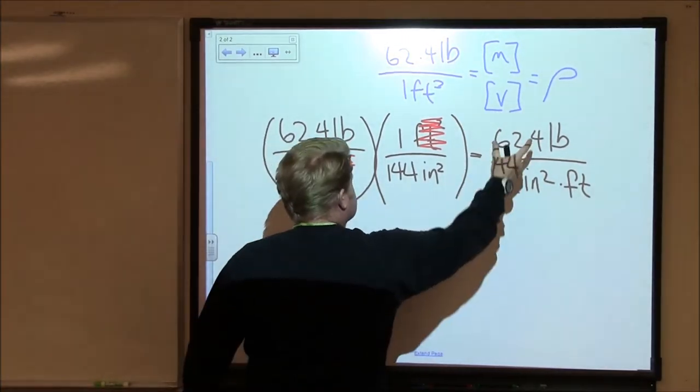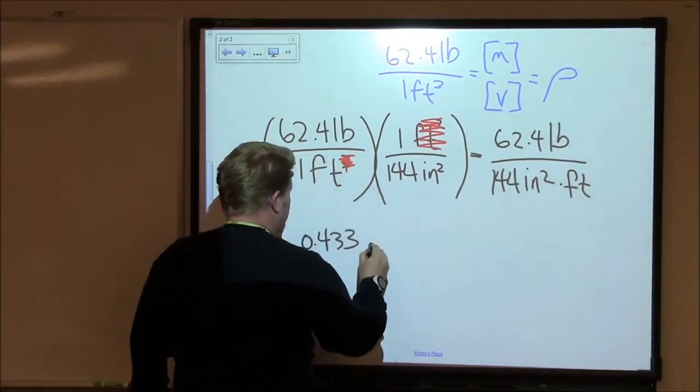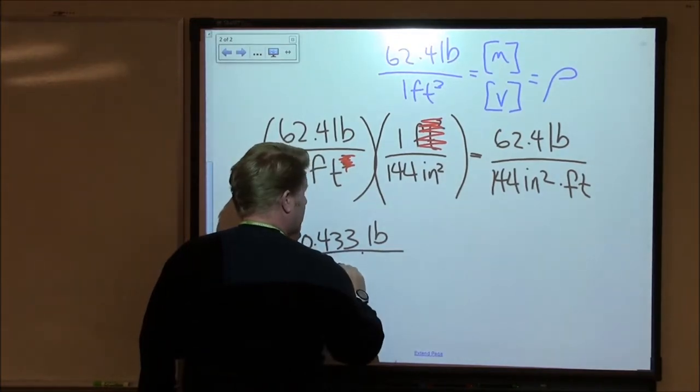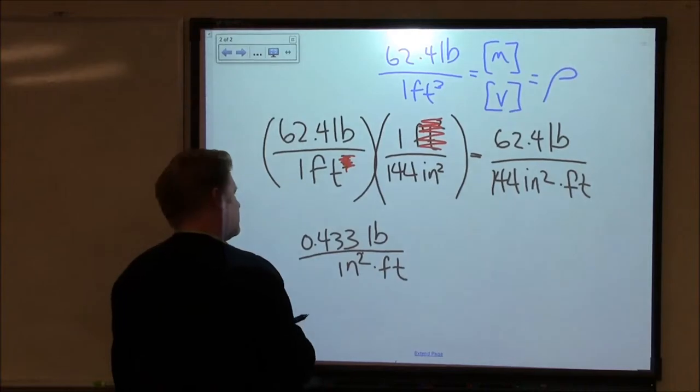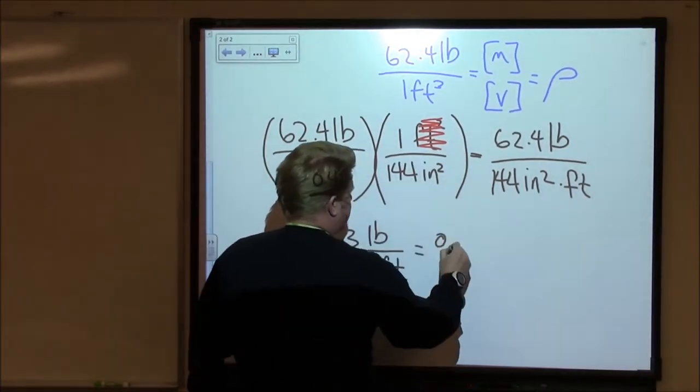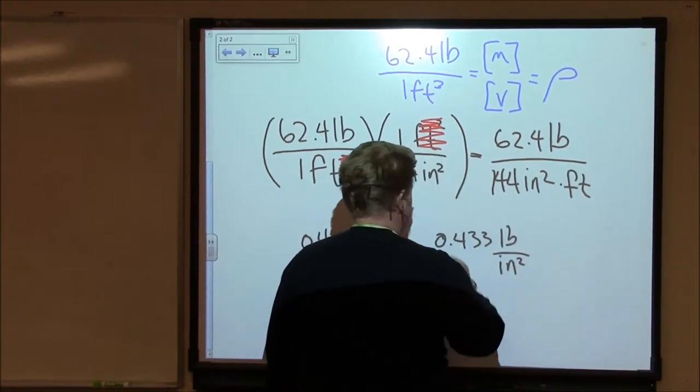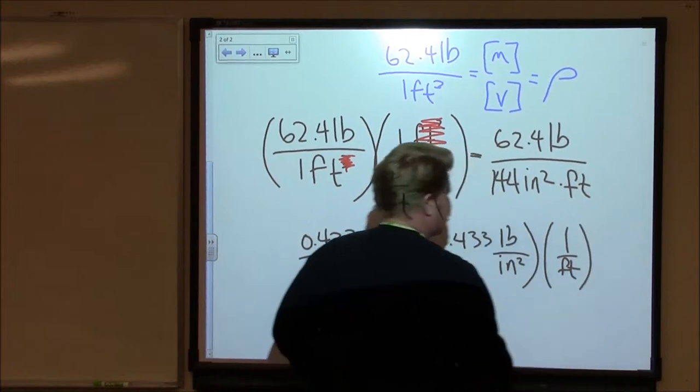If I divide 62.4 into 144, I find that that number gives us, ah, there we go, 0.433. I've got square inches, and I've got feet down here. What if I rewrite this as 0.433 pounds per square inch right here, and then I've got this extra one over foot sort of left over, right?